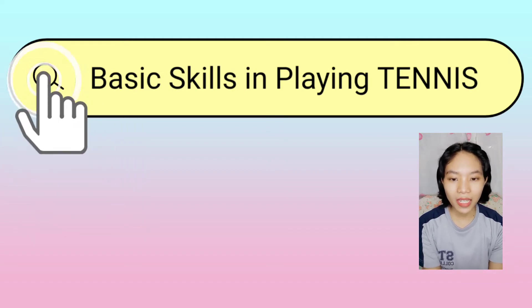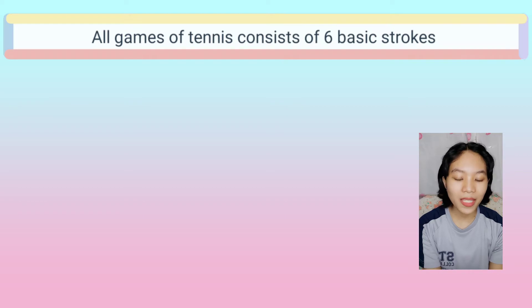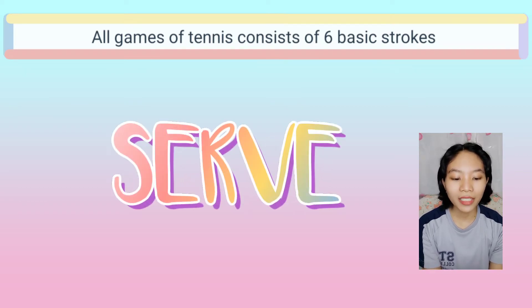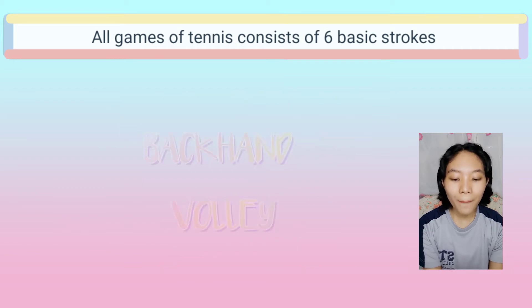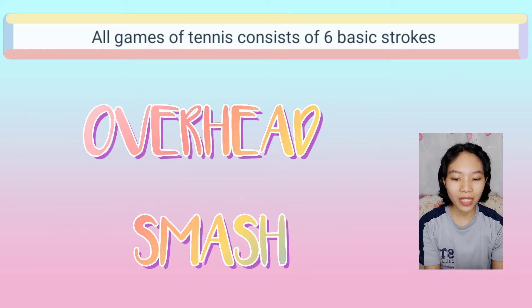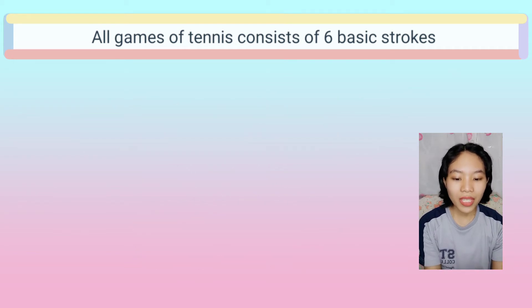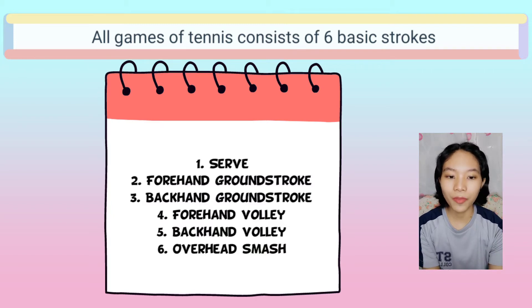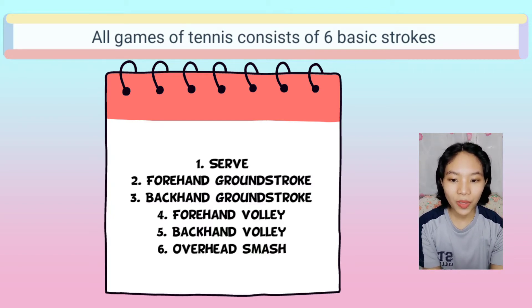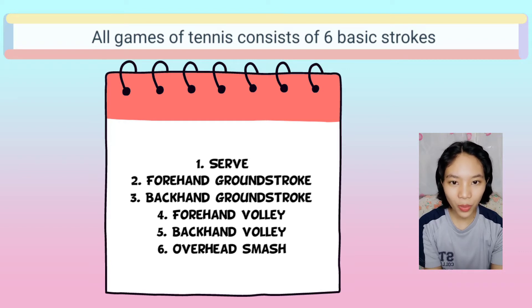6 Basic Tennis Strokes. All games of tennis consist of 6 basic strokes: the serve, forehand ground stroke, backhand ground stroke, forehand volley, backhand volley, and the overhead smash. The 6 basic strokes are fundamental movements a player performs to hit a tennis ball. A shot, on the other hand, is what happens as a result of a stroke.